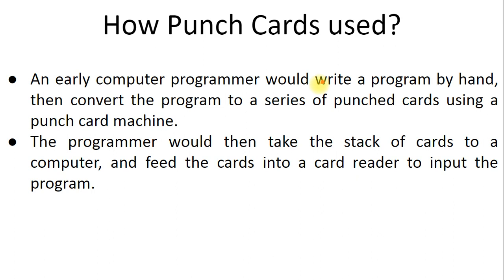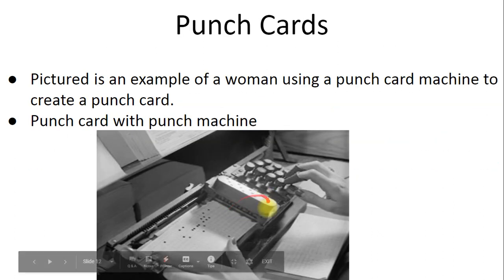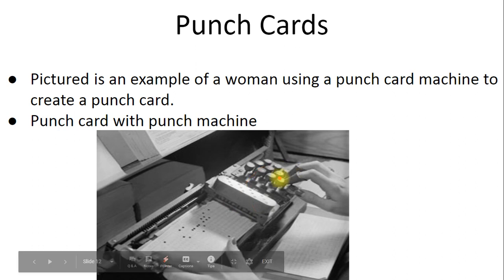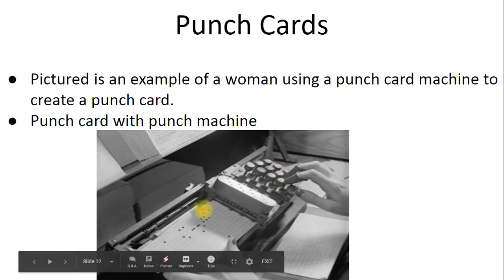This is a picture of a punch card. These are the keys from which the programmer can punch the punch card. You can punch the card using these keys. For example, here is a woman using a punch card machine to create a punch card - the machine generates holes one by one according to the code. So for each line, one card is generated.